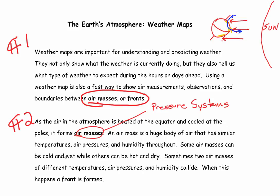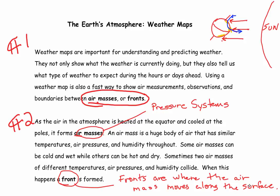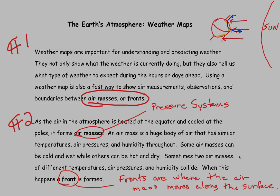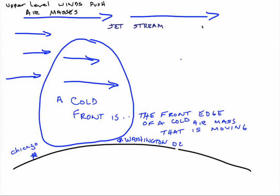Some air masses can be cold and wet while others can be hot and dry. Sometimes two air masses of different temperatures, air pressures, and humidity collide. When this happens, a front is formed. Fronts are where the air mass moves along the surface — like if you're standing by the road and a car comes by going 40 or 50 miles per hour, pushing wind out of its way as it goes past you.